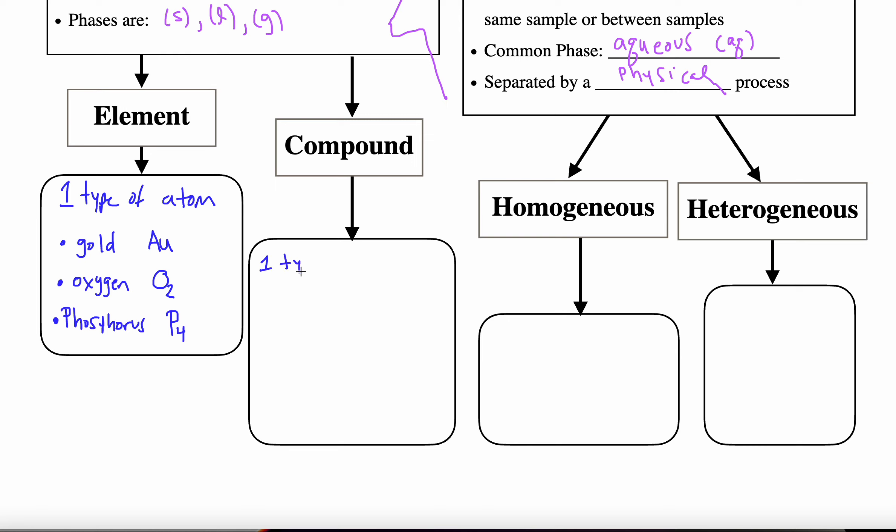What makes the compound different than the element is that the compound has a fixed ratio. When we use the term it's fixed in chemistry, it means it doesn't change. So a compound has a fixed ratio of different elements.